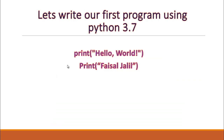Let's write our first program using Python 3.7. The command is: print, then hello world within round brackets and double quotation marks. Whatever you write in double quotes it will print the message as it is. Let's start.